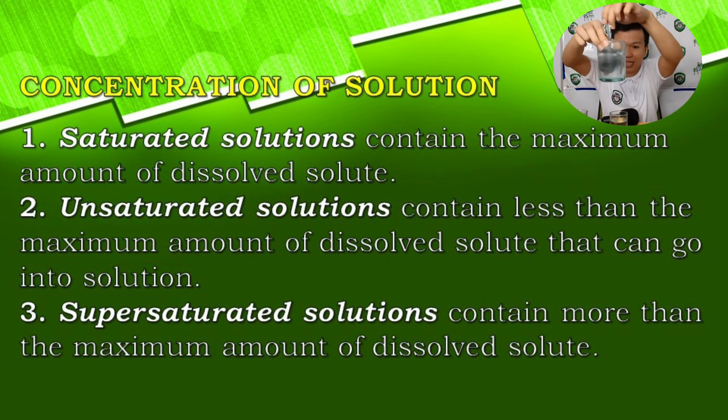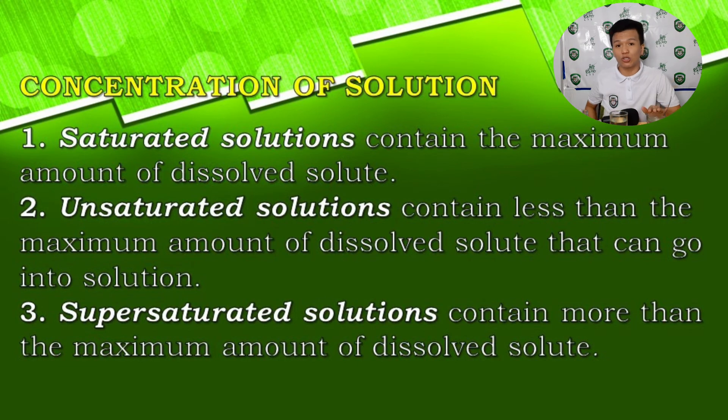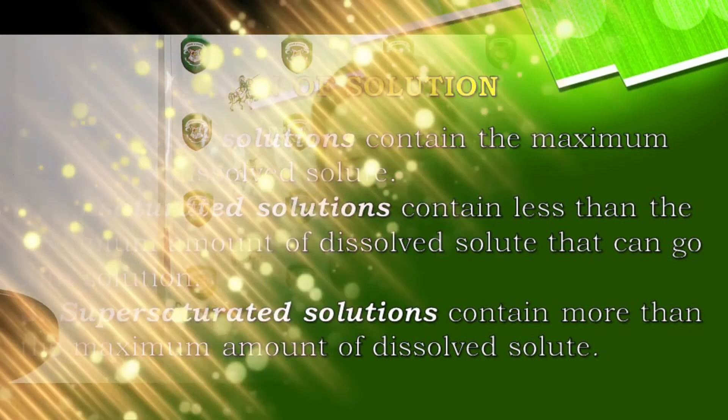Then we have the supersaturated solution. A supersaturated solution is one where the amount of solute contained by the solvent is more than the maximum that can be dissolved. Therefore, not everything dissolves. Looking at glass C, you can still see salts that are not yet dissolved, which proves that this solution is supersaturated.